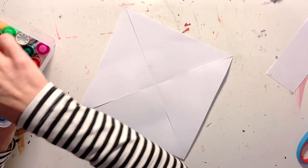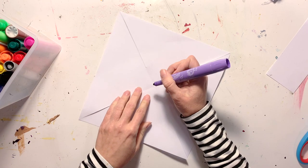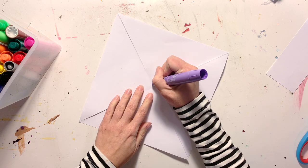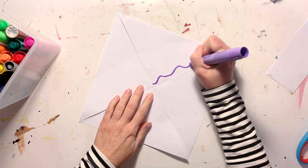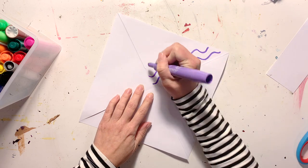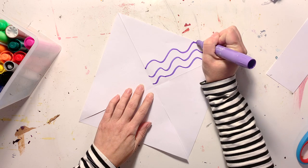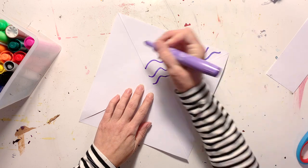Now this stage is optional. You can use markers or any colorful materials that you have to add some designs to your pinwheel. So I'm just going to do some wavy lines and I'll do some different types of line and pattern on each triangular section of my pinwheel.